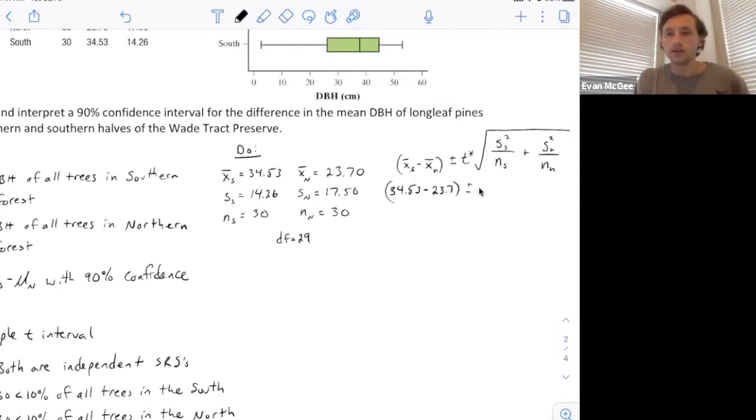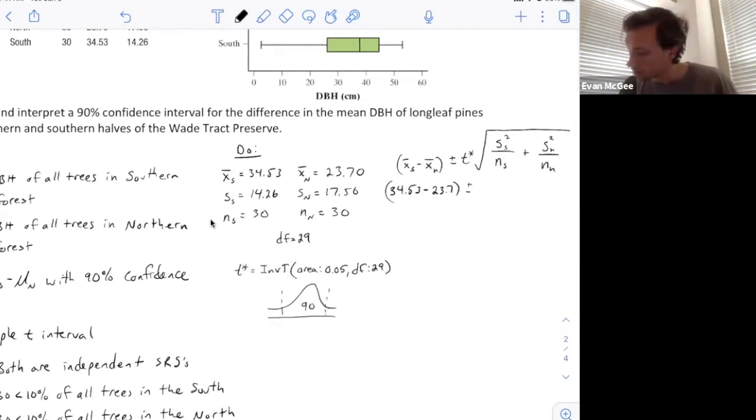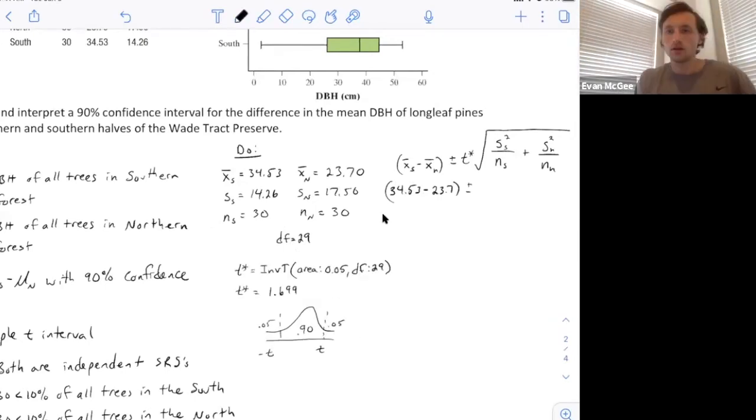To find my critical value, I'm using 90% confidence, so I do inverse t with 29 degrees of freedom. My critical value is 1.699 because the tail area is 0.05 with degrees of freedom 29. This picture reminds you where that 0.05 came from—you're finding negative and positive critical values for the central 90% of all t-values.